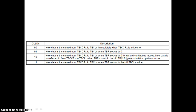For CCLDX = 11: new data is transferred whenever TBCLX reaches the old value. With respect to timer selection, division, output modes, and compare mode, Timer B operates similarly to Timer A — you can replicate the same knowledge from Timer A to Timer B.